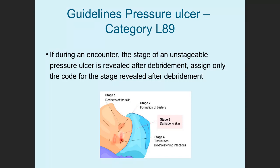Additional guidelines: if during the encounter the stage of an unstageable pressure ulcer — the one covered by scabbing, skin graft, or transfer — is revealed after debridement, such as debridement of eschar, and the physician can then determine the stage, use the code for whatever stage was revealed after debridement. It started out as unstageable, and now it's stageable — so use the stage that's been revealed.